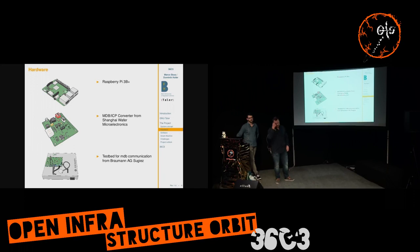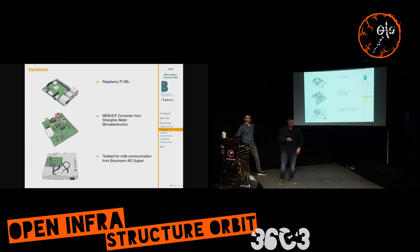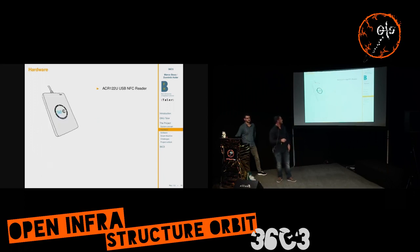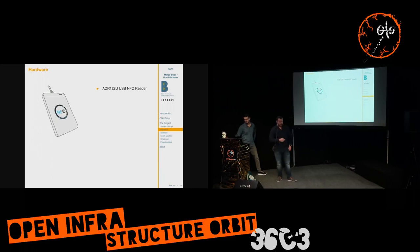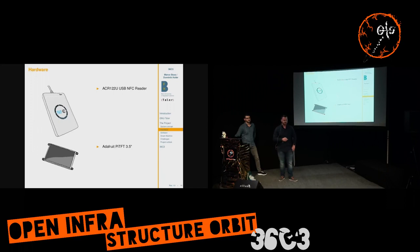We had a test bed for MDB communication — just a simulator for a vending machine — which we got from Braumann AG, a small company in Switzerland. The NFC reader is connected via USB to the Raspberry Pi. And finally we added a display to show a QR code, because not every smartphone has NFC implemented.